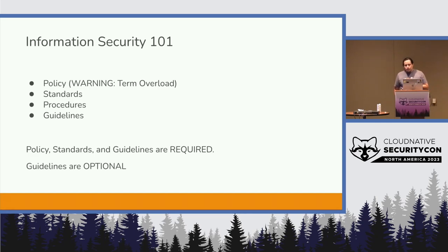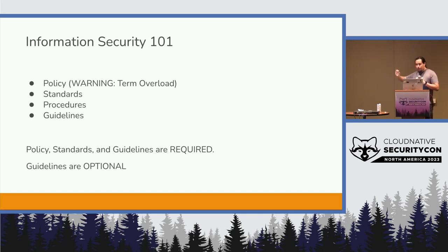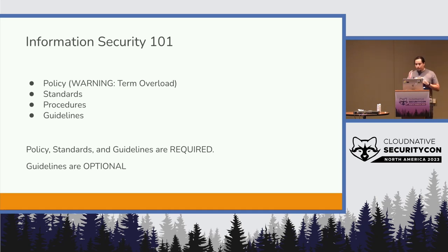The way organizations tend to approach this is to push towards setting up policy. When I mention policy here, unless I explicitly say otherwise like OPA policy, I mean organizational policies. Policy is things like: all data at rest must be encrypted. That's a simple policy. Standards are how you do that — for example, we use AES with a specific key size.